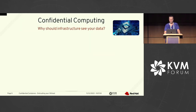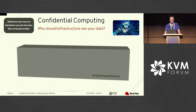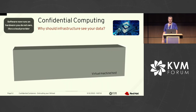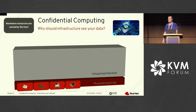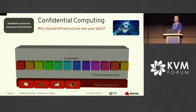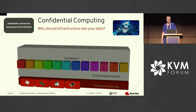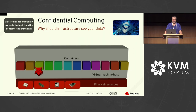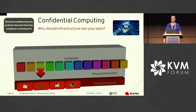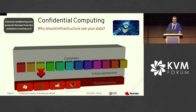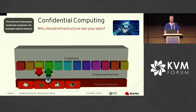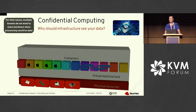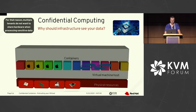So, confidential computing — what is it? Why should infrastructure see your data? The software we develop now runs on hardware that most of us don't own. It runs on a cloud provider, for instance, and the hardware resources are owned by the host. The containers inside carve out resources from the host, relying on sandboxing mechanisms like seccomp, etc. But these are designed to protect the host from the containers, not the other way around. An admin on the host system can freely peek inside a container — read its memory, dump memory, etc. This makes it difficult for multiple competing tenants to share hardware when they process sensitive data.